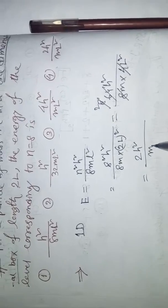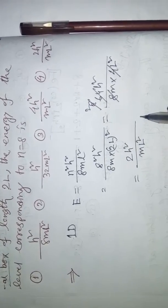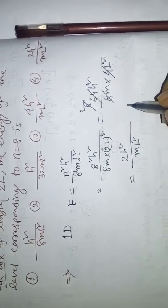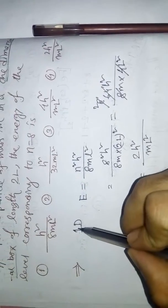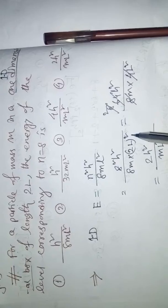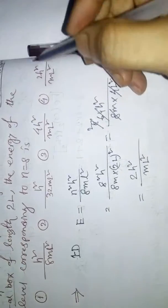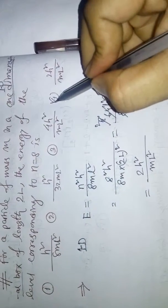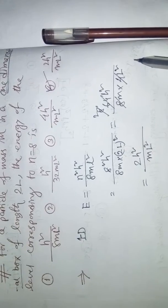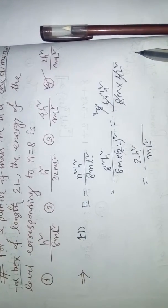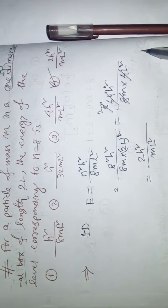Understood? This is for 1D box. In question, 1D is there, that's why this is your correct option, number 4. So simple. Thank you and please subscribe my channel.